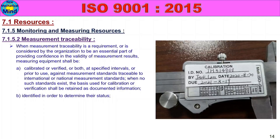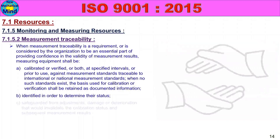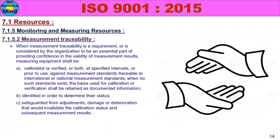Calibration status details such as instrument ID and calibration due date shall be maintained. Measuring equipment shall be safeguarded from adjustments, damage, and deterioration that would invalidate the calibration status and subsequent measurement results.